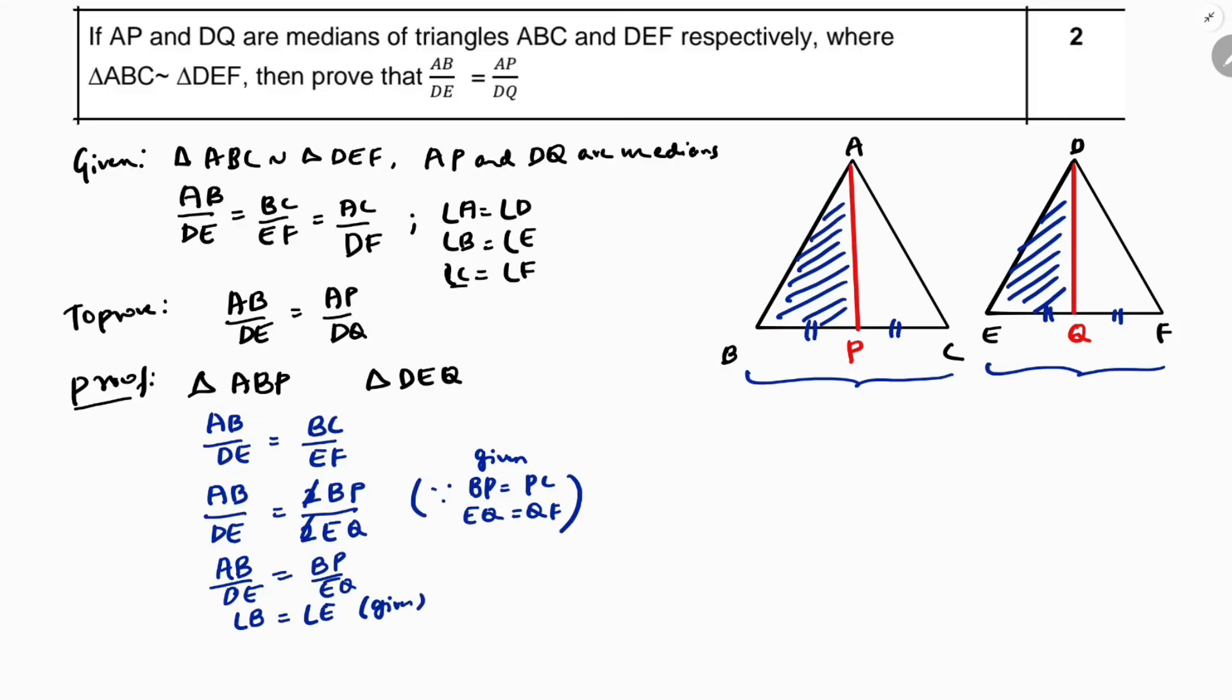See, now, I can say clearly, triangle ABP is similar to triangle DEQ by SAS similarity. Because 2 sides are proportional and included angle is equal.